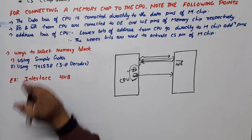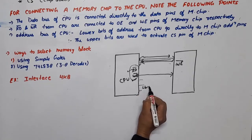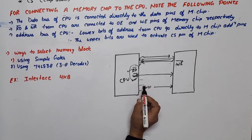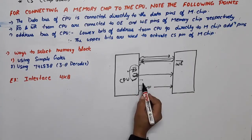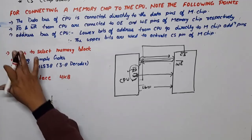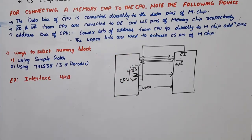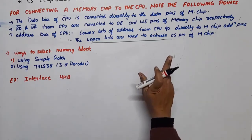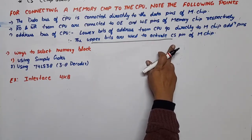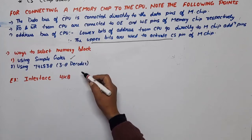Regarding the address bus, the lower bits of the CPU address are connected directly to the memory chip, while the higher bits are used for chip selection — connected to the CS bar signal. This activating of CS is called address decoding. For address decoding, there are two methods: the first uses simple logic gates, and the second uses a decoder.